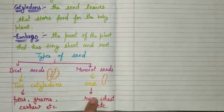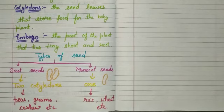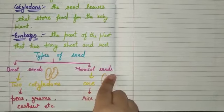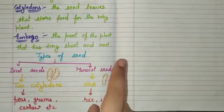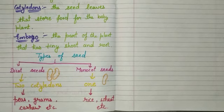Examples of monocot seeds are rice and wheat. In rice, it is one single seed that does not separate. That's all for the day — don't forget to make notes. Thank you.